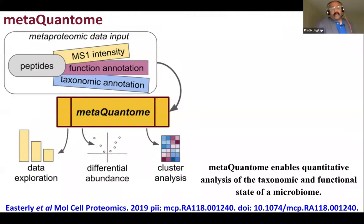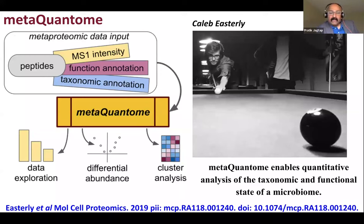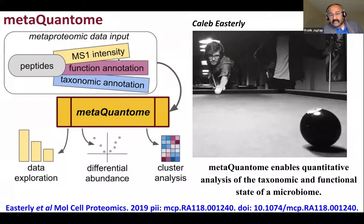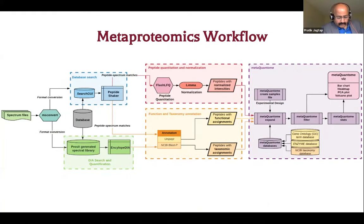With that motivation, we started working on a tool called Metaquantome. A talented student, Caleb Easterly, had joined the lab. We set out using the peptides, their detection, MS1 intensity, functional annotation from software, and taxonomic annotation — feeding this information into Metaquantome. Using various R modules, it generates outputs such as data exploration, differential abundance, or cluster analysis. This manuscript was published three years ago in Molecular and Cellular Proteomics. Apart from the SearchGUI/PeptideShaker detection methods, we also use quantitation tools such as FlashLFQ from the University of Wisconsin, which we have installed in Galaxy, and the outputs feed into Metaquantome's multiple modules for statistical analysis and visualization.